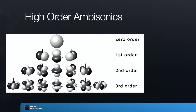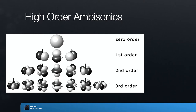That's why there is high-order ambisonics. It's a version of ambisonics that uses more channels to give much more precision in terms of space. First-order ambisonics uses four channels: omni plus three figure-of-eights. Second-order ambisonics adds five additional channels with more complex polar patterns, giving nine channels total for much more spatial resolution. Third-order ambisonics adds seven more channels — 16 total — for even more detail, and you can continue to higher orders.